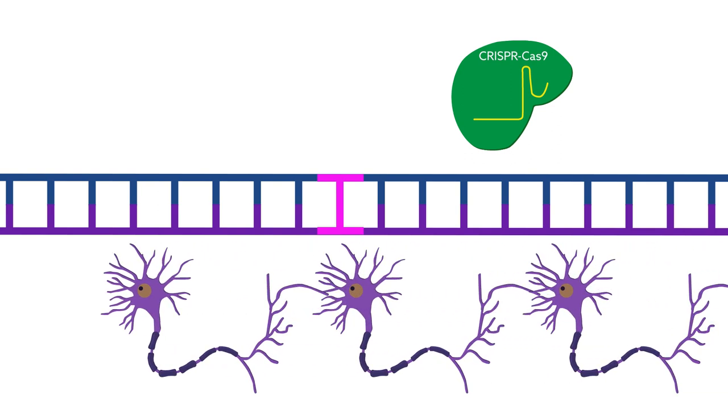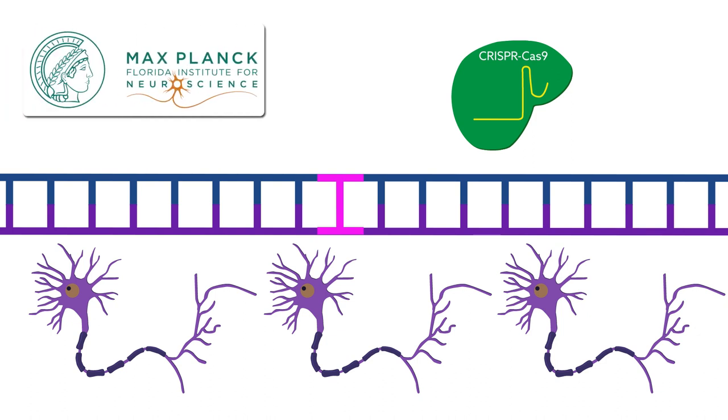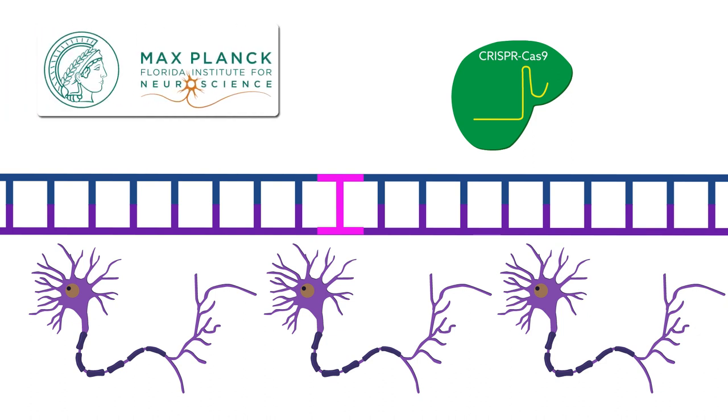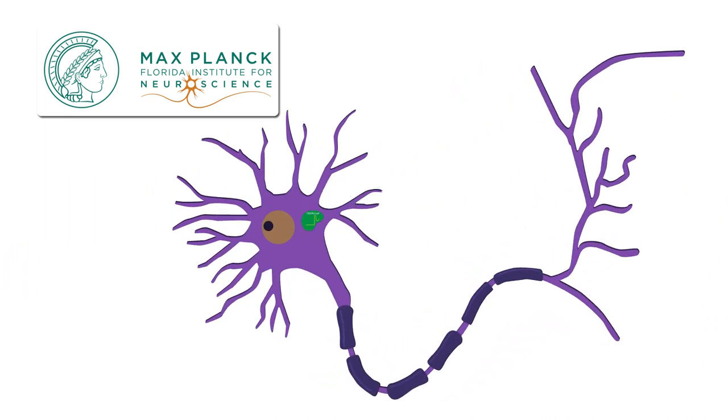Since that includes most of the neurons in the brain, this has limited the technology for neuroscientists. But now, a group at the Max Planck Florida Institute for Neuroscience has figured out a way to make CRISPR work in these cells, opening up new possibilities for the field.